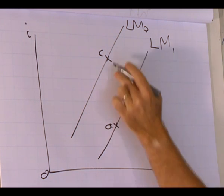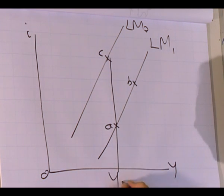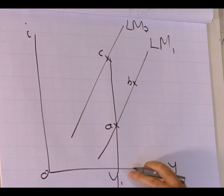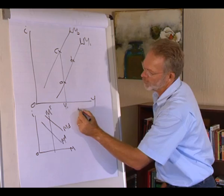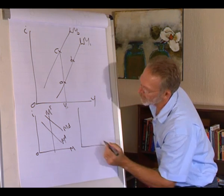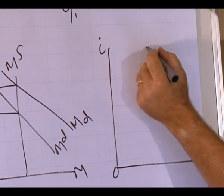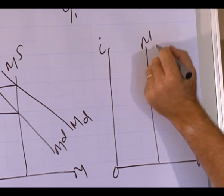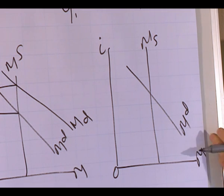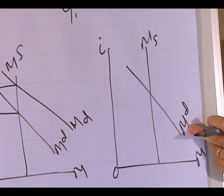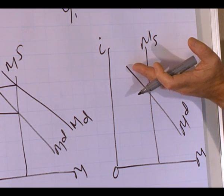If we compare point A with point C, we'll see that the level of production did not change. So what caused the increase in the interest rate? If we turn to the financial market, we have the supply of money and the demand for money. Nothing has happened to the level of output, so therefore the demand for money did not change, but something caused the interest rate to increase.